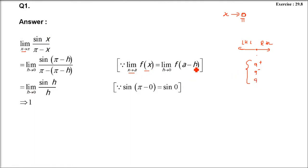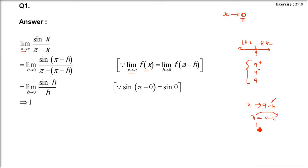We have x tends to a, f(x). a minus h is the left-hand limit. If we put x as a minus h, h is very small — h tends to 0. When x tends to a minus h, x equals a minus h. If I put a here, h would be a minus a, because x tends to a. So a minus x and x tends to a gives us h tends to 0.